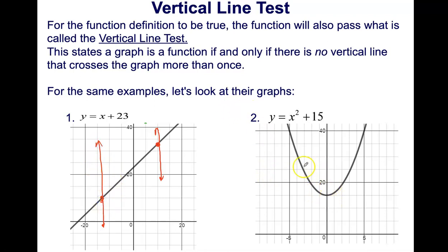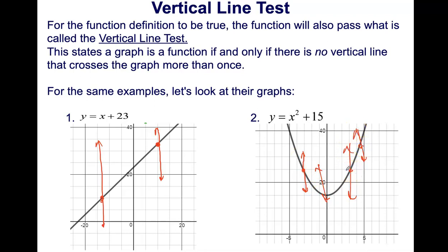This next graph looks like a quadratic function. Drawing a vertical line anywhere through it, it passes through exactly one point anywhere you draw it. So this is also an example of a function.